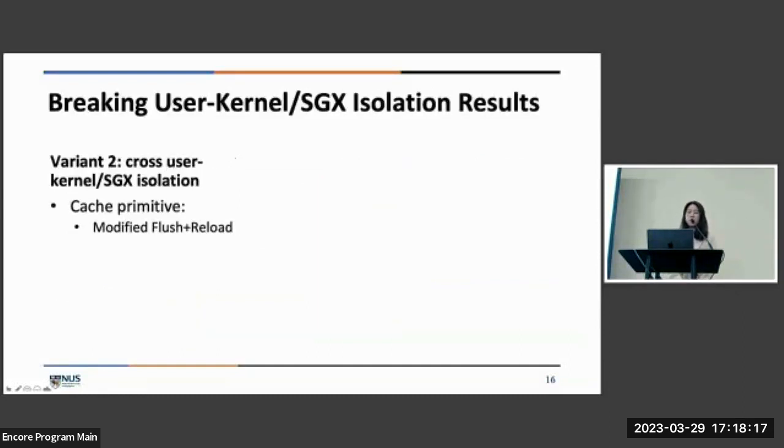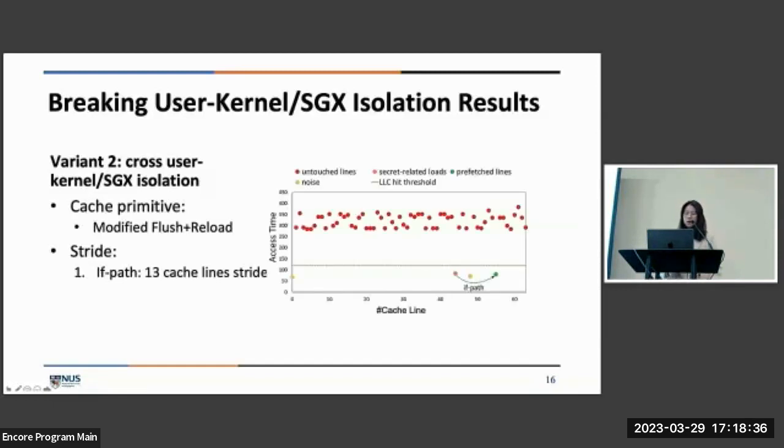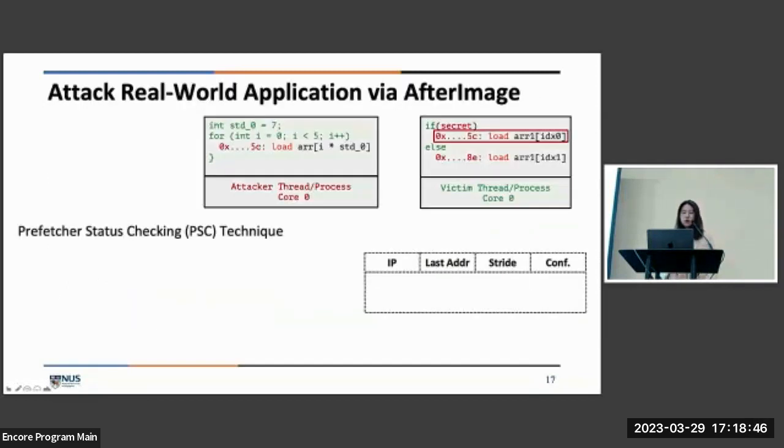Does it also work for cross user-kernel and SGX isolation? The answer is yes. To demonstrate that, we built a custom kernel module in Linux and we also create an SGX enclave. Similarly, we use flush-reload to extract the secret and train the stride to be 13. So the if path can also be inferred by the attacker and the stride is observed.